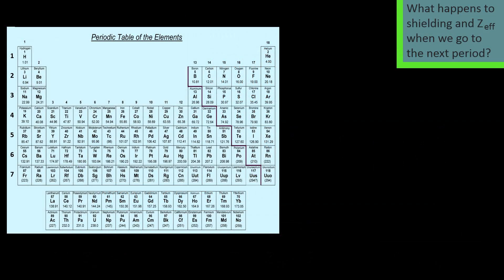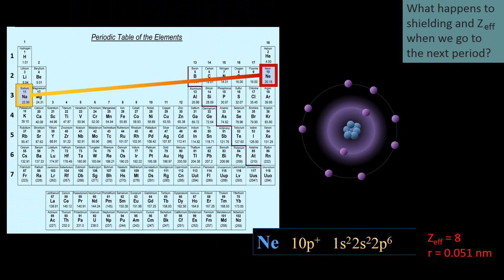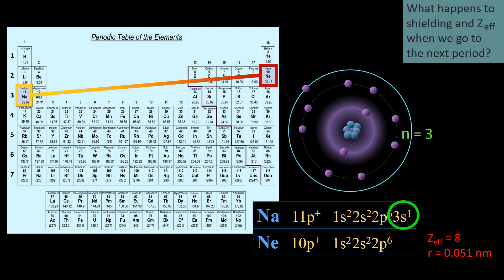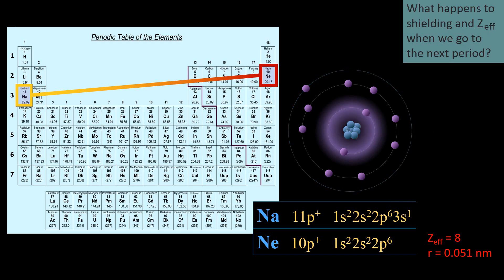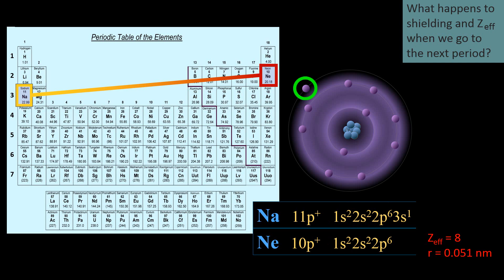Now let's look at what happens to shielding and effective nuclear charge when we go to the next period. Let's compare neon, the last element in period 2, to sodium, the first element in period 3. Neon has 10 protons and 2 core electrons, giving it a Zeff of 8 and a small radius. When going to sodium, several changes occur. Sodium's single valence electron is in a higher energy shell, n=3, so its orbital is larger and its average distance from the nucleus is greater. Most importantly, neon's 8 valence electrons are now in the core, so shielding suddenly increases from 2 to 10 electrons. This is also a sudden increase in repulsions, pushing the valence electron further out and reducing Zeff to 1 — a dramatic decrease in the attracting effect of the nucleus — resulting in a much larger radius compared to neon.